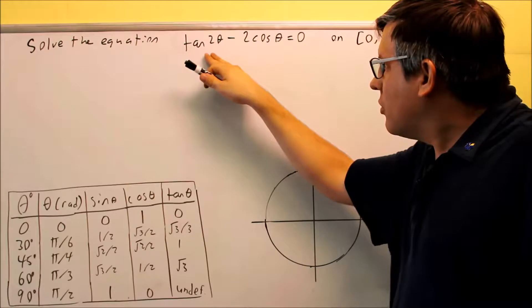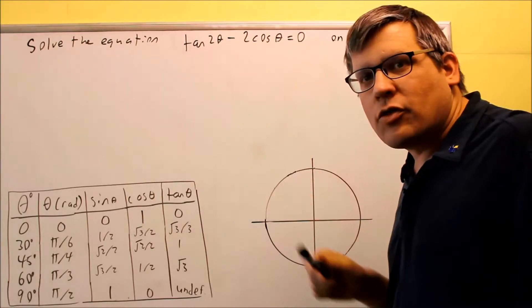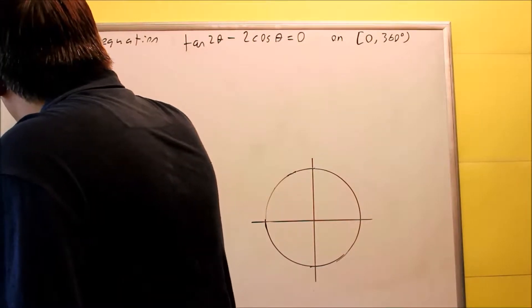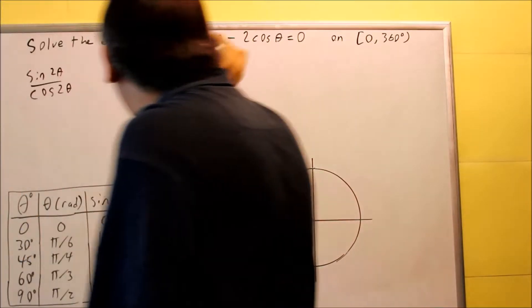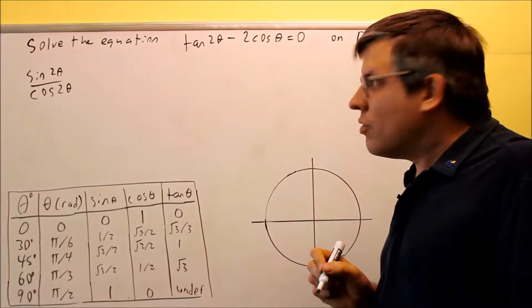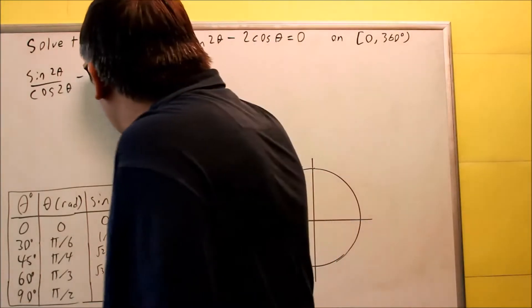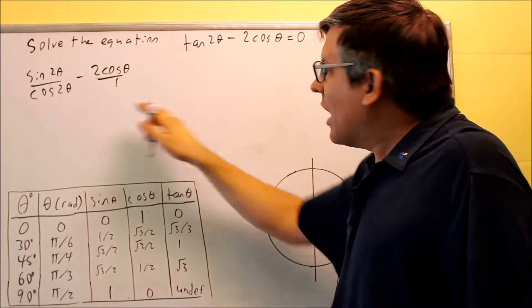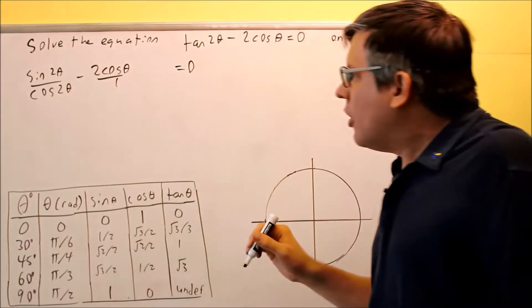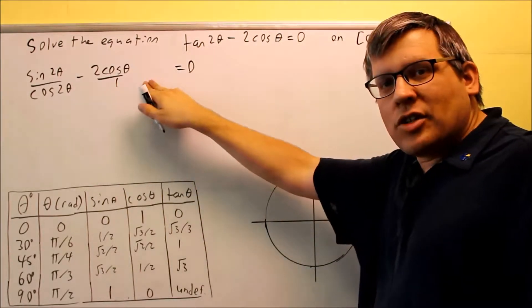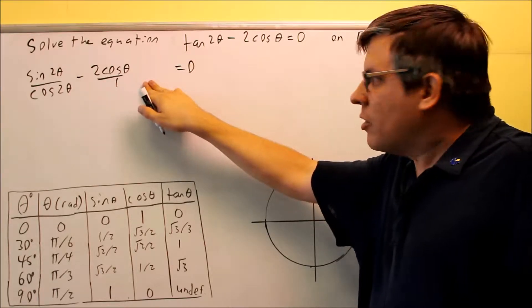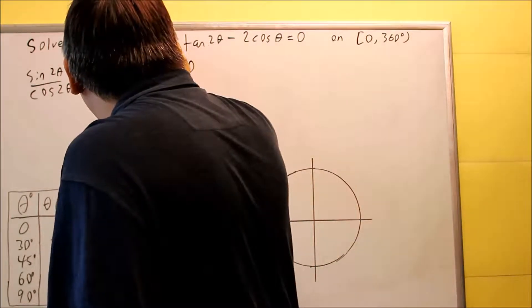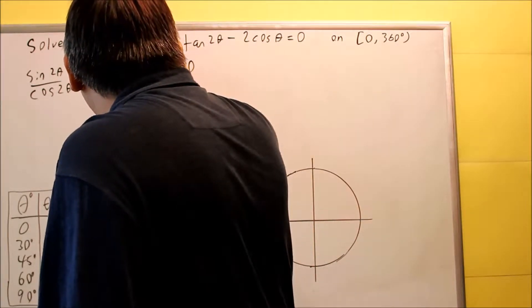So instead, what I'm going to do is I'm going to use a different identity for tangent 2 theta. The one I want to use is sine 2 theta over cosine 2 theta. That would also be equal to tangent 2 theta. Now I have the rest of it here. Now for this one, I'm going to have to get some common denominators here in order to combine this together. I want to get both denominators to be cosine 2 theta, so I'll multiply top and bottom by cosine 2 theta.